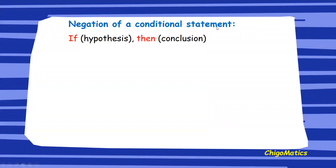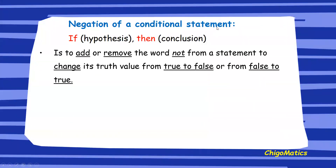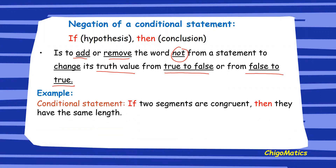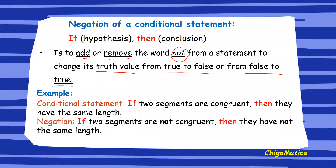Now let us look at the negation of a conditional statement. To negate a conditional statement you add or remove the word 'not' from the statement to change its truth value from true to false or from false to true. For example, the conditional statement: if two segments are congruent then they have the same length — that is very true. Its negation: if two segments are not congruent, then they do not have the same length.